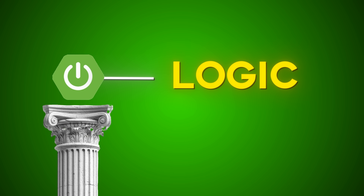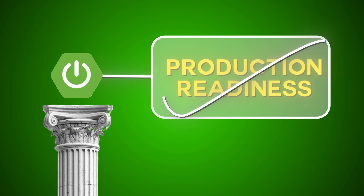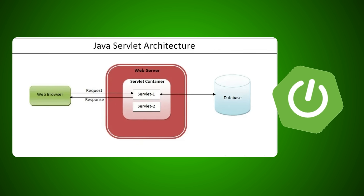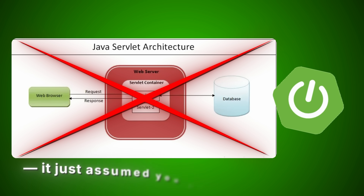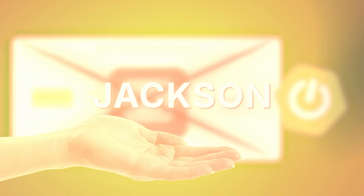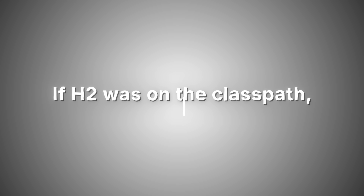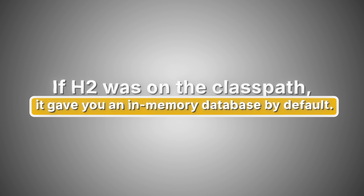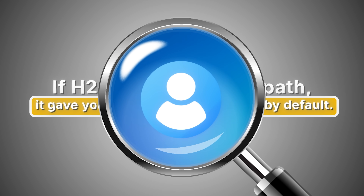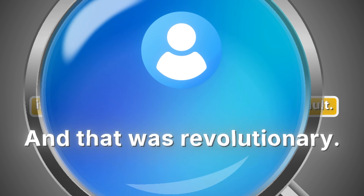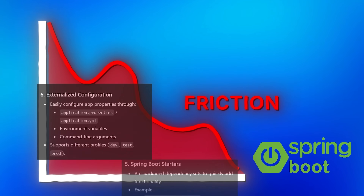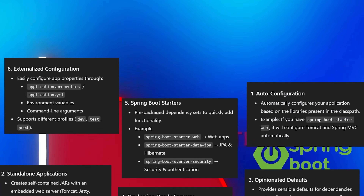And this wasn't just for hobbyists — production readiness was baked in from day one. Spring Boot's magic came from opinionated design. You didn't need to configure a servlet; it just assumed you wanted one. You didn't need to pick a JSON library; Jackson was already there. If H2 was on the class path, it gave you an in-memory database by default. Behind the scenes it was deeply complex, but for the developer it felt simple — and that was revolutionary. Spring Boot didn't just reduce boilerplate; it eliminated friction. You started building features on day one, not fighting with infrastructure.